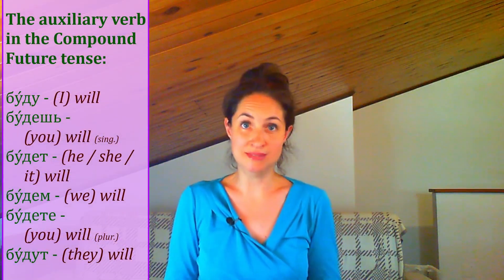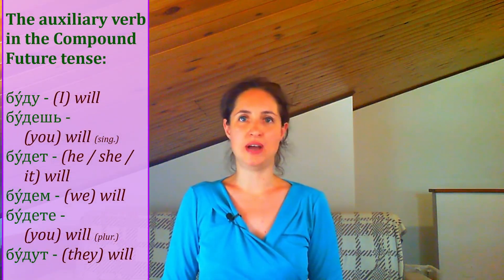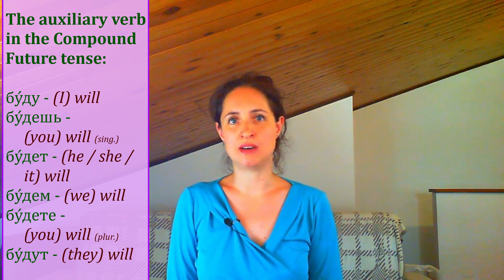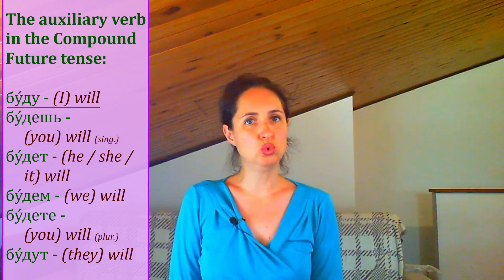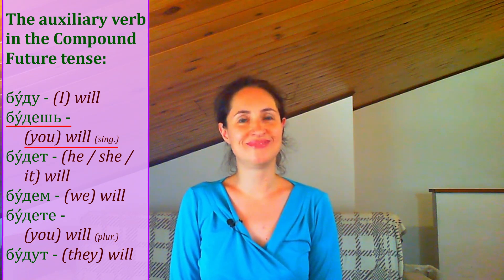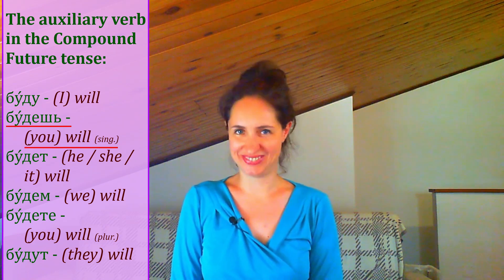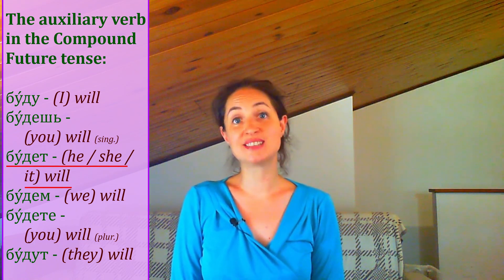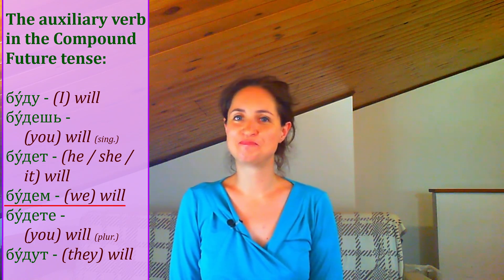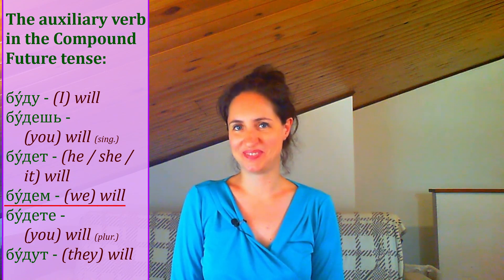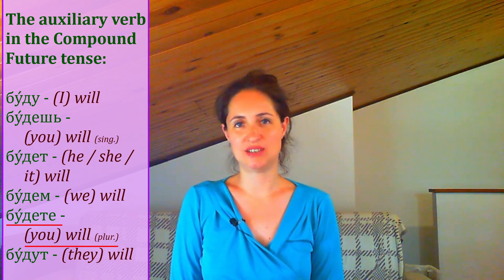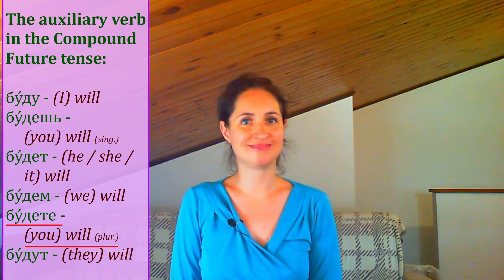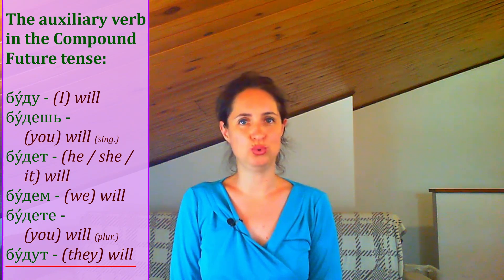Let's learn the forms of the auxiliary verb, which is the verb 'to be', in the compound future in Russian. Repeat after me. Повторяй за мной. Буду. Будешь. Будет. Будем. Будете. Будут.